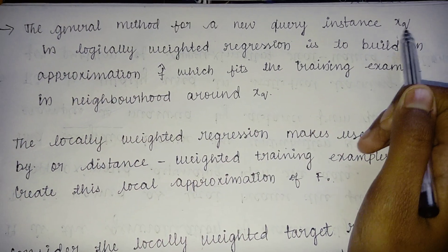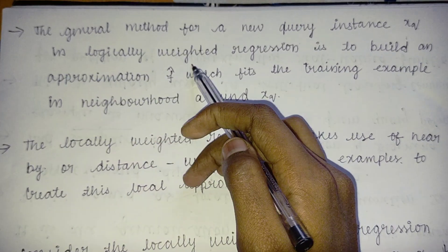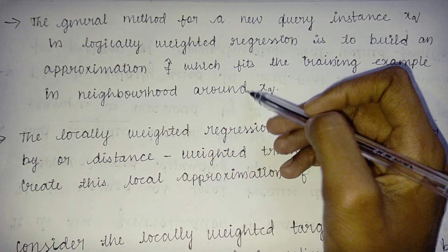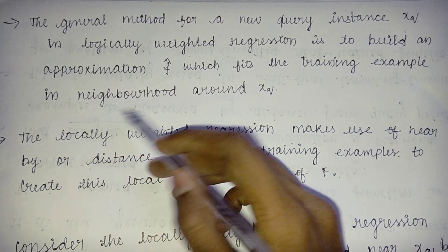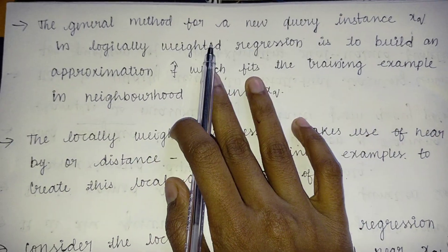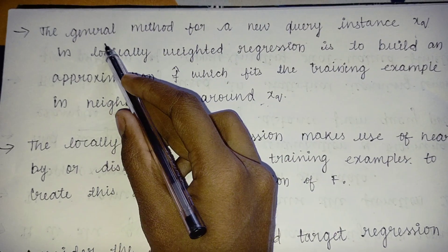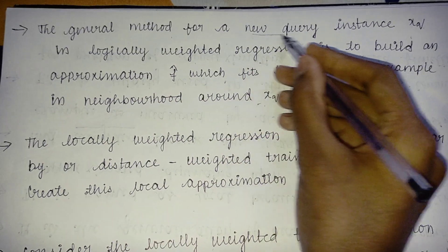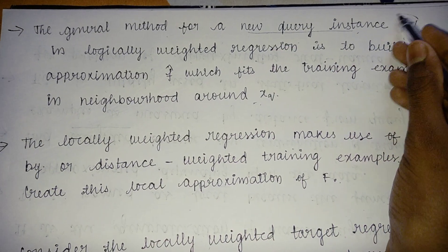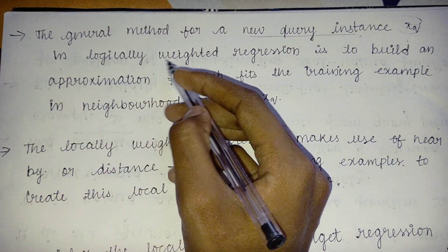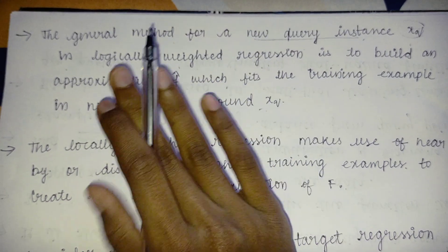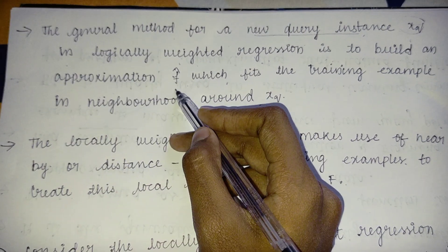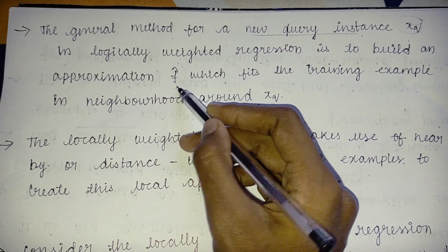The general method for a new query instance xq in locally weighted regression is to build an approximation f̂ which fits the training examples in the neighborhood around xq.